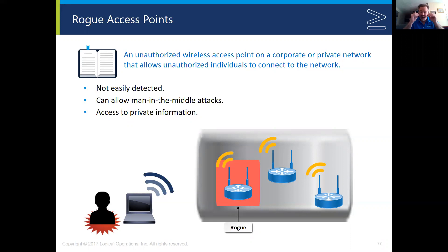In this session we're going to talk about some wireless threats that you might encounter in your work life and everyday life. The first thing we want to talk about is called a rogue access point. A rogue access point is any piece of unauthorized hardware that might get installed by an attacker on your corporate or private network.